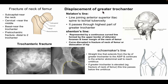For assessing displacement of the greater trochanter, three lines are used. Nelaton's line joins the anterior superior iliac spine to the ischial tuberosity and normally passes through the highest point of the greater trochanter. Shenton's line is a continuous curved line formed by the upper border of the obturator foramen and the lower margin of the neck of the femur; this curve is disrupted in fracture of the neck of the femur or hip dislocation. Shoemaker's line extends from the tip of the greater trochanter to the anterior superior iliac spine and continues to reach the umbilicus; if the greater trochanter is elevated (e.g., in fracture of neck of femur), this line passes below the umbilicus.